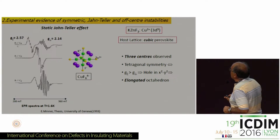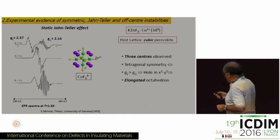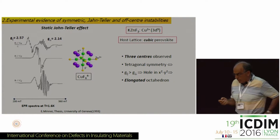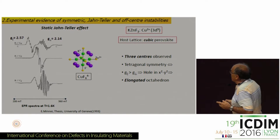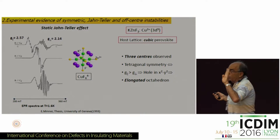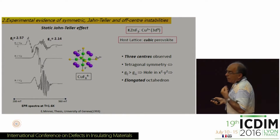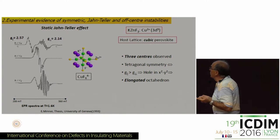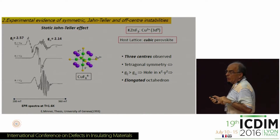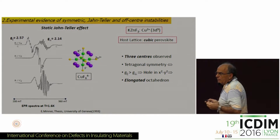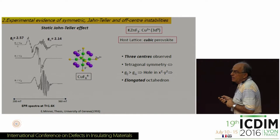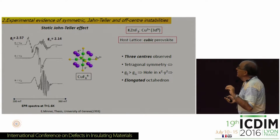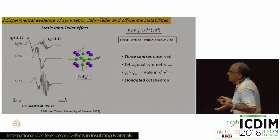For the Jahn-Teller example, we remain in a perovskite lattice but replace manganese 2+ with copper 2+. EPR spectra show three centers when the magnetic field is parallel to one principal axis of the cube, with two centers giving the perpendicular spectrum. Analyzing the angular rotation pattern, each center displays tetragonal symmetry. The g-factor shows g-parallel is much higher than g-perpendicular, indicating the hole is in the x²-y² orbital and the octahedron is elongated.